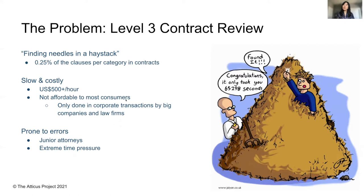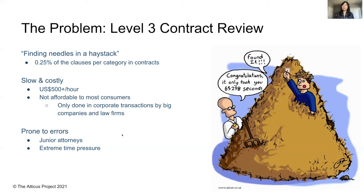Last but not least, level three contract review is prone to errors. This task is mostly handled by the most junior attorneys. It's a skill that takes years to perfect, and as soon as you've perfected it, you move on to higher-level tasks. Most attorneys doing this work are under extreme time pressure — a few days, a few hours, or maybe a couple of weeks to review thousands of pages. Human fatigue sets in and there are a lot of misses. The perfect solution is to use AI to find the needles in the haystack so attorneys can focus on the clauses that are actually important.